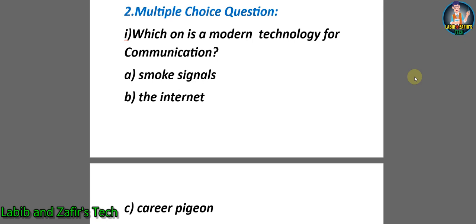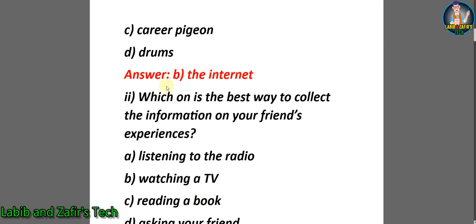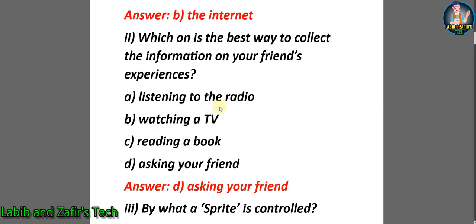Now let's go through some multiple choice questions. Number one: Which one is the modern technology for communication? A) Smoke signals, B) The internet, C) Carrier pigeon, D) Drums. The correct answer is B, the internet. Number two: Which one is the best way to collect information on your friend's experiences? A) Listening to the radio, B) Watching TV, C) Reading a book, D) Asking your friend. The correct answer is D, asking your friend.